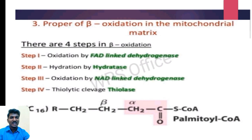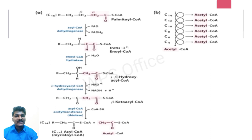There are 4 steps in beta oxidation. Step 1: oxidation by FAD-linked dehydrogenase. Step 2: hydration by hydratase. Step 3: oxidation by NAD-linked dehydrogenase. And the final Step 4: thiolytic cleavage by thiolase.